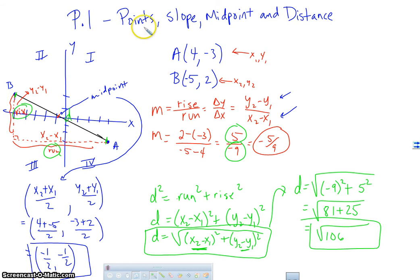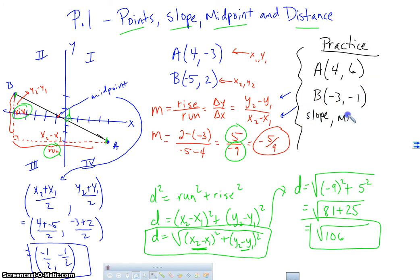So this is how we plot a point, find the slope, use the midpoint formula, find the distance. Okay, so why don't you take a second to do just a practice here. What you should do is plot the points. Let's plot the point A as 4 and 6. And then plot the point B, negative 3, negative 1. And then plot these points, find the slope, the midpoint, and the distance. All right, that's it for this video. We'll see you next time. Bye-bye.